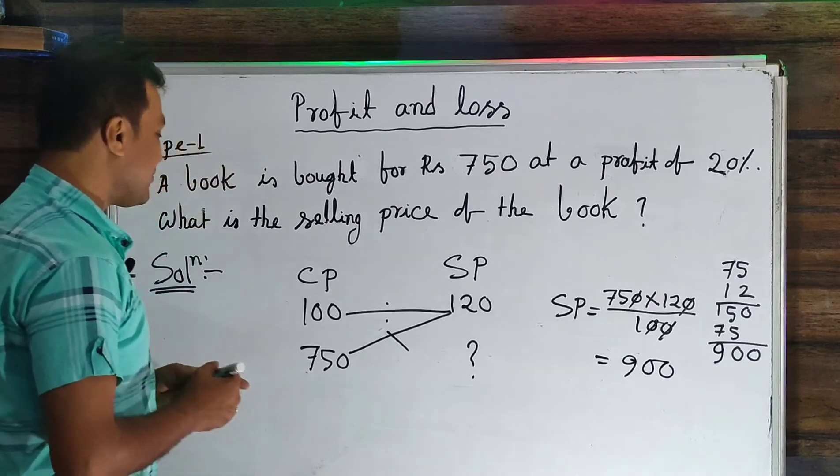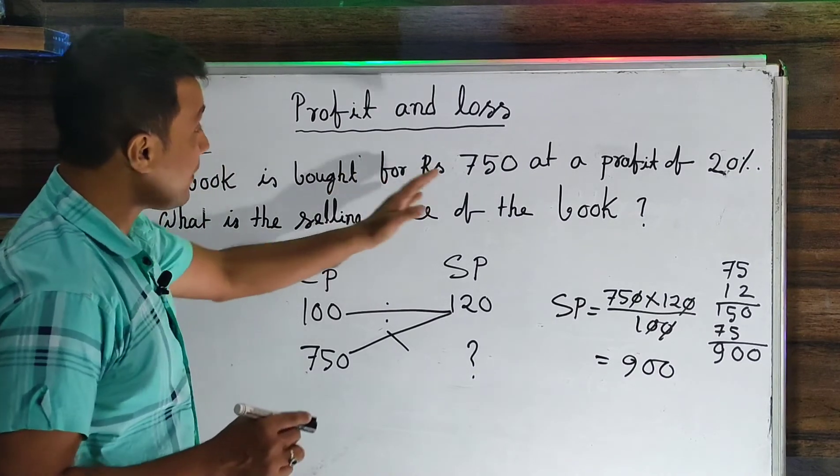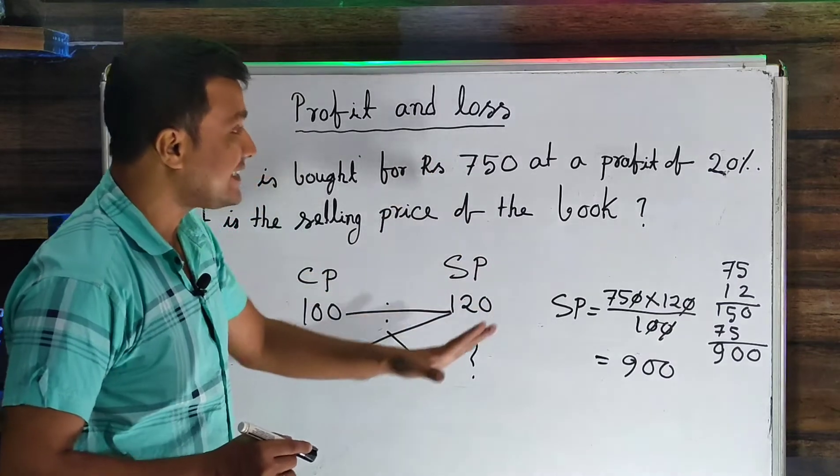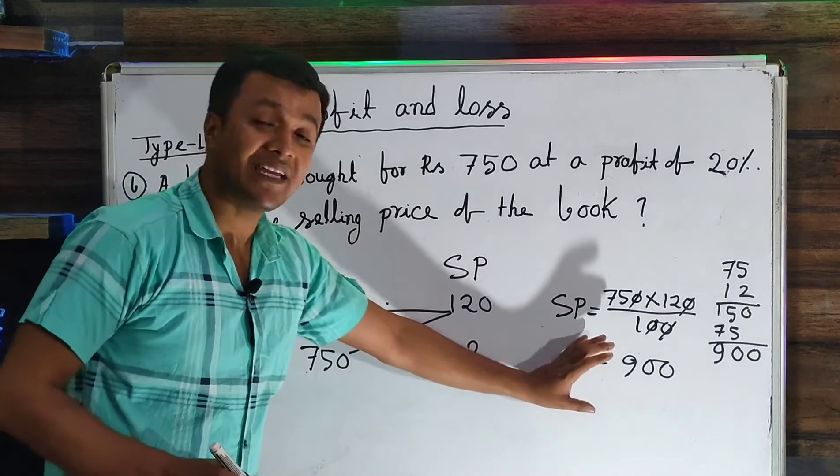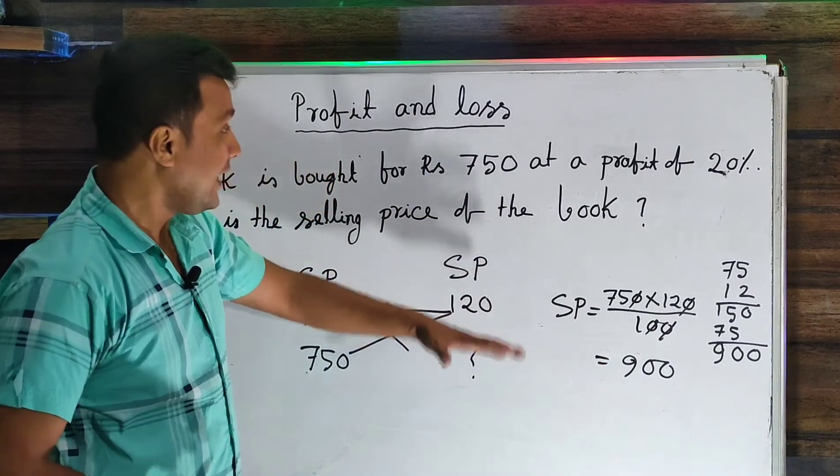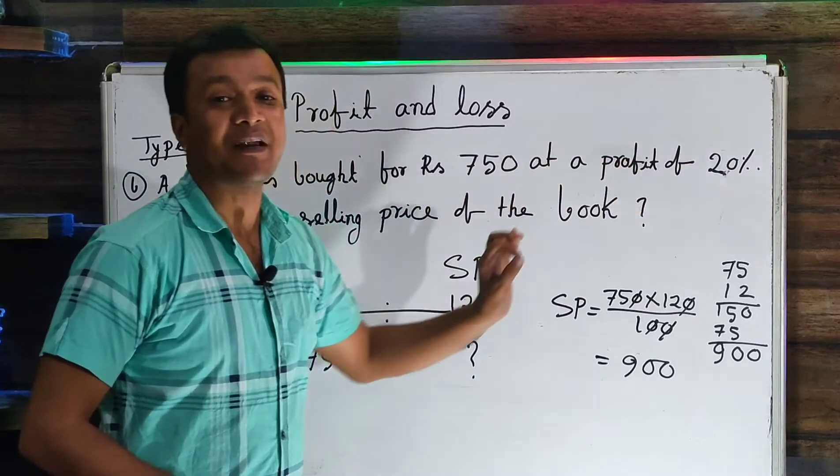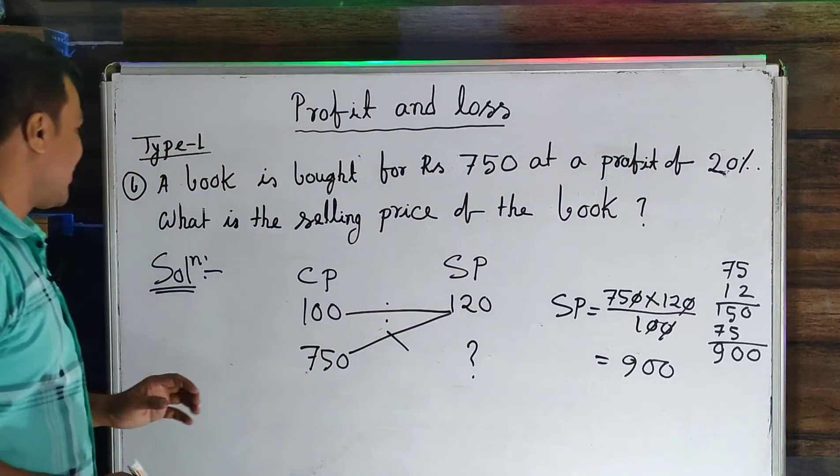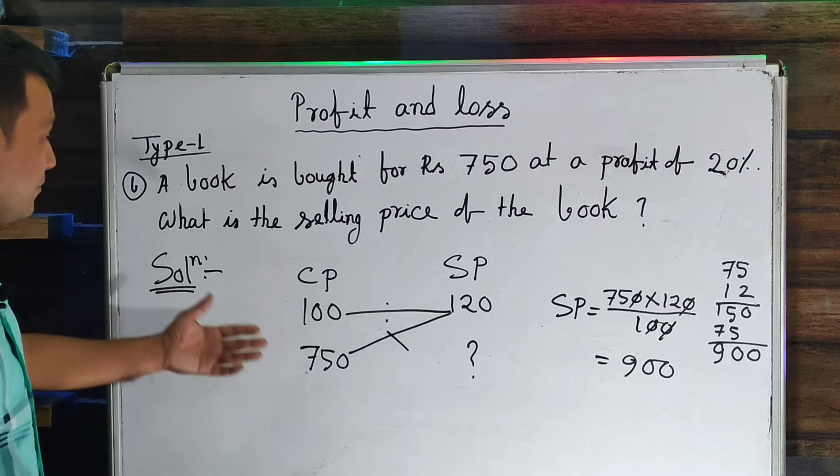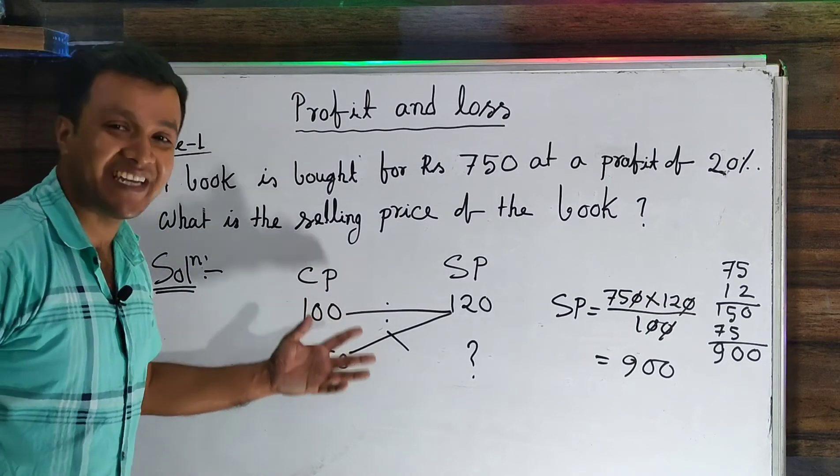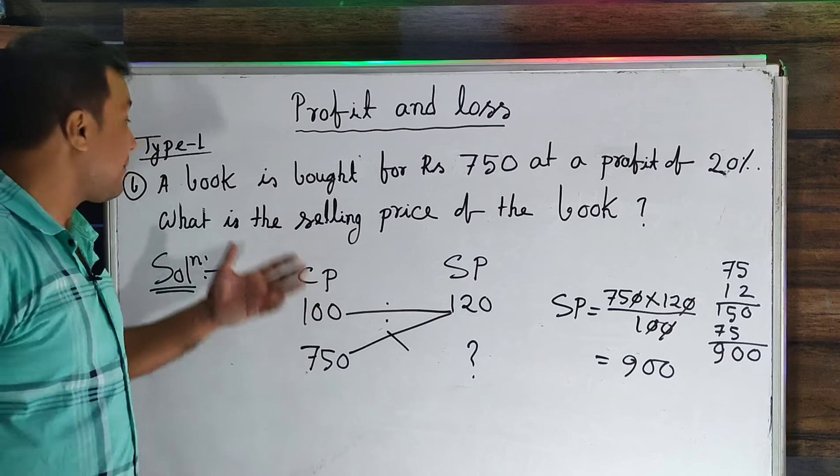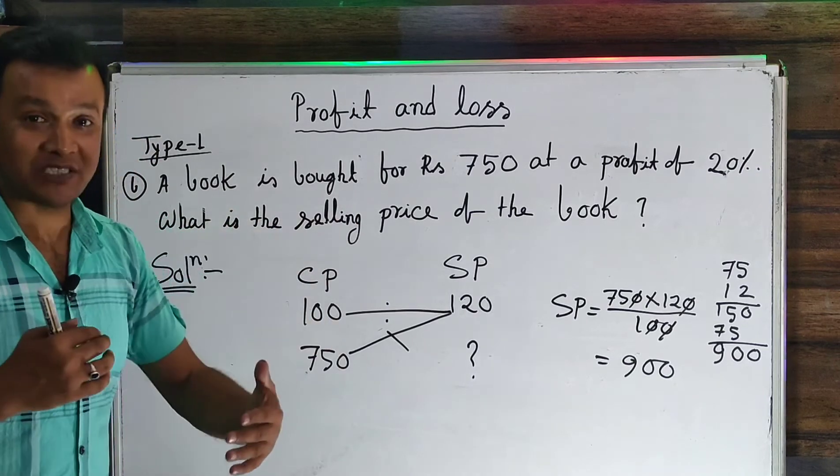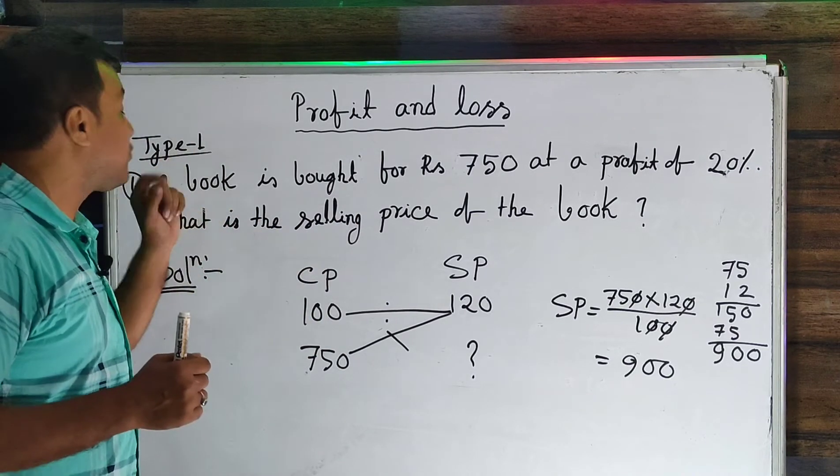The result is that from 750 rupees cost price, if you want to make 20% profit, you should sell at 900 rupees. It's a very easy way to apply.